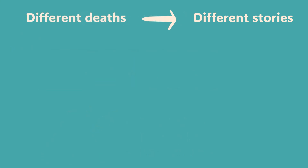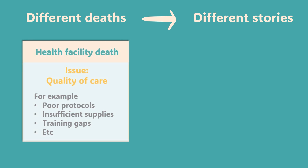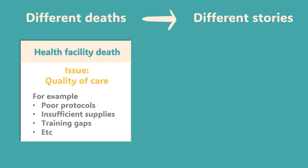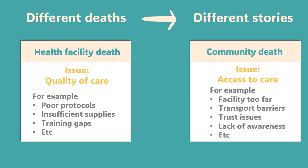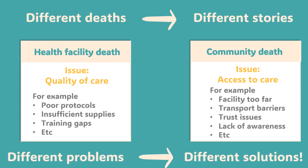Those two deaths tell completely different stories. On one side, you have the patient who made it to a health facility, who got treatment, who was in the system. On the other side, you have the person who died in the community, at home, without ever getting formal medical care. A death at a facility tells you primarily about quality of clinical care — maybe treatment protocols weren't followed, maybe supplies ran out, maybe health workers weren't sufficiently trained. A death in the community tells you about access to care — maybe the facility was too far away, maybe the family couldn't afford transport, maybe they didn't trust the system, maybe they didn't even know treatment was available. Different deaths, different problems, different solutions. And if you mix them together, you just won't know which problem you're dealing with.